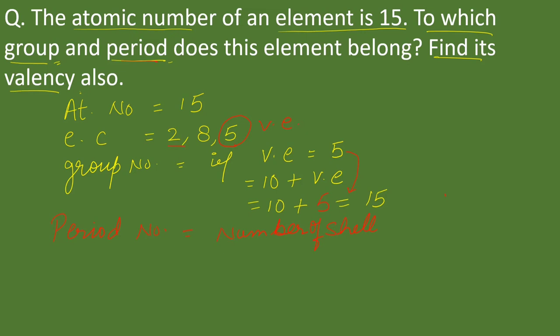Number of shells we can find out with the help of electronic configuration. It has K shell, L shell, and M shell, that is equal to 3. So what is its period number? Third period.